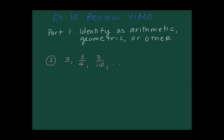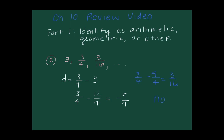Number two, we're doing the same thing. First I'll check for a common difference by taking any term minus the previous term, which gives three. Three-fourths minus twelve-fourths is negative nine over four, and checking further confirms there is no common difference. So this sequence is not arithmetic.